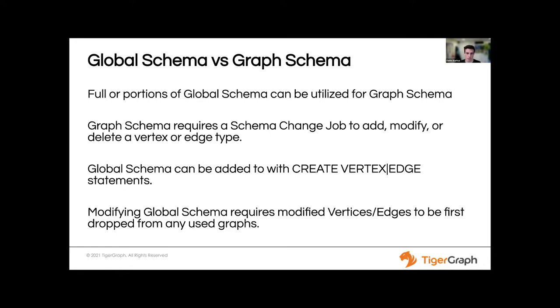On the question of whether data is unique for a global vertex: the data is on a graph level. Your schema is just the representation of how that data will be arranged, but the data itself is on a graph level.